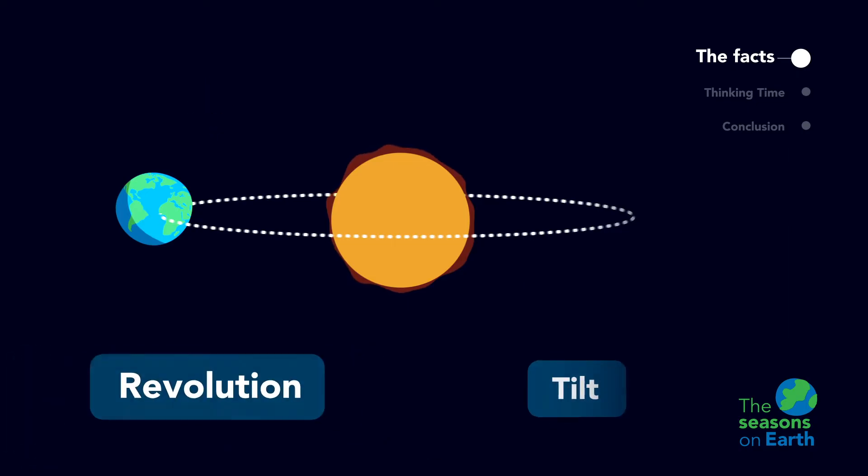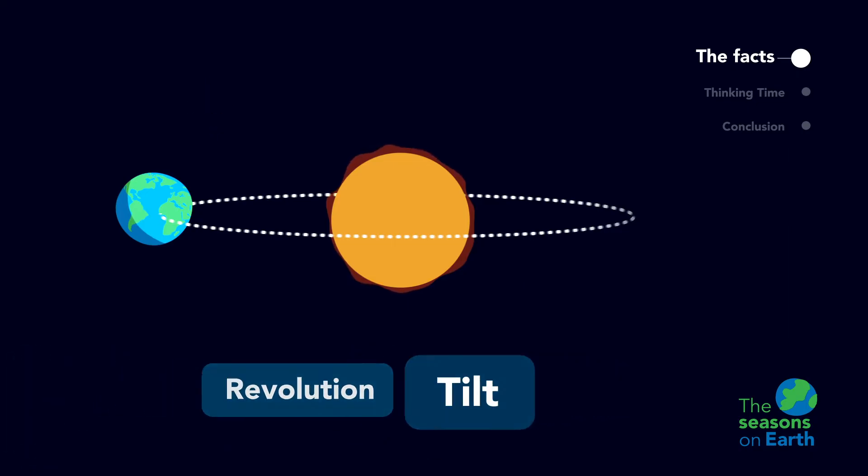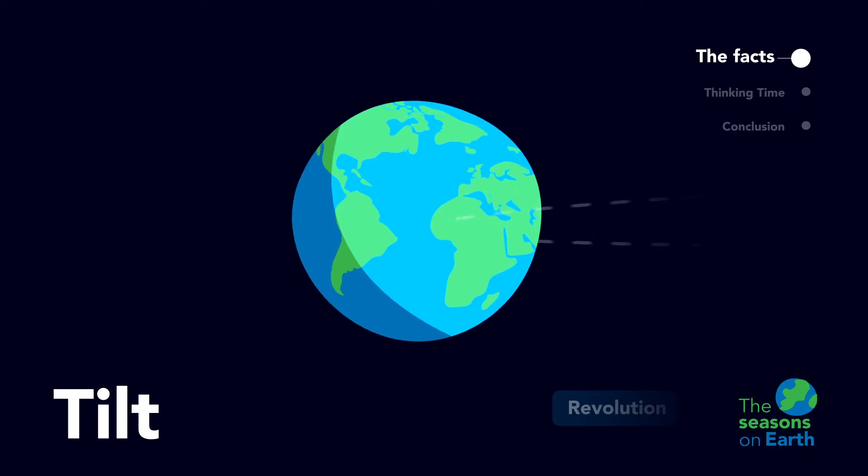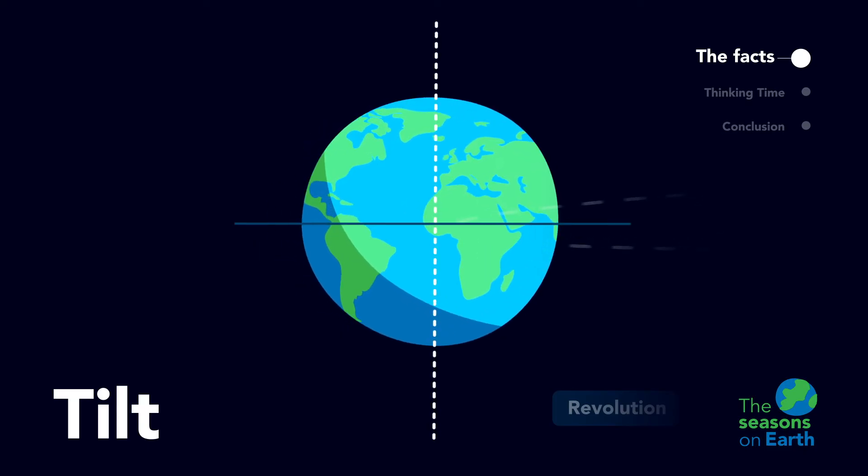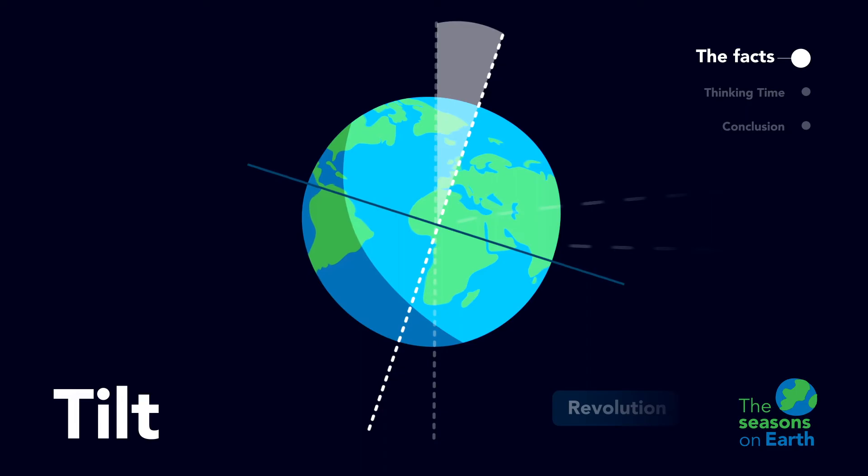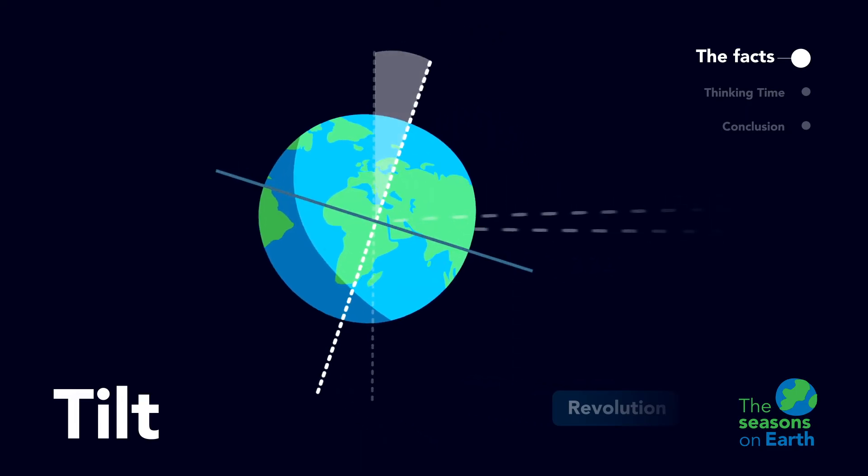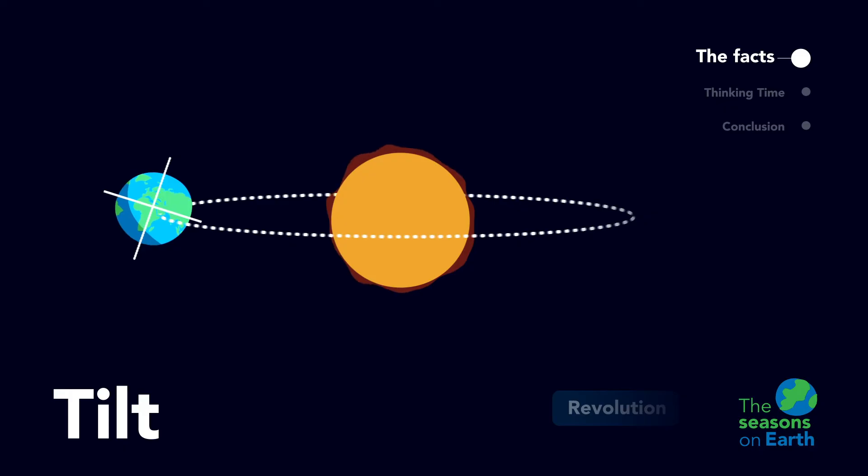The second fact we must think about is the earth's tilt. Instead of moving upright, the earth is slightly tilted at a 23.4 degree angle. As the earth rotates, it is always tilted at the exact same angle of 23.4 degrees.